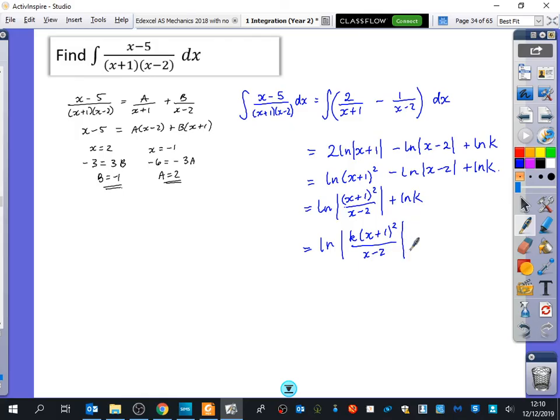I put the modulus signs back in though, because I'm not sure if the bottom bit is going to be positive or negative. And then I'm just going to put the k inside, I'm multiplying this by k. So it's the ln of k(x plus one) squared over (x minus two). What was the question? Instead of plus c, I've just done ln k. And the reason I do ln k, it's just a constant, is because I can't put c inside this, but I can put the k inside this. So if you just do plus c at the end, your answer instead would be ln of (x plus one) squared over (x minus two) plus c. Those two things are equal. They're just expressed in a slightly different way.